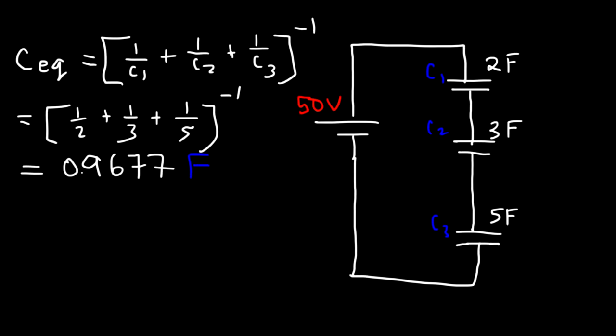Now, with this information, how can you find the voltage across each of the capacitors? Sometimes you may need to find the voltage of just one of the capacitors, and then with that, you can find how much potential energy is stored in that capacitor. But let's focus on finding the voltage of each. So once you have the equivalent capacitance, the next thing you need to do is calculate the charge.